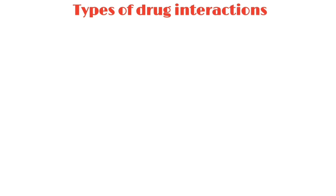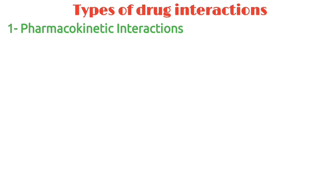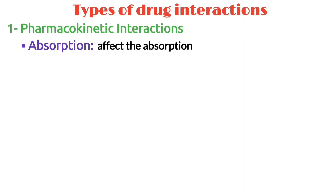There are several types of drug interactions. Let us first discuss the pharmacokinetic interactions. If we talk about the absorption of drugs, one drug can affect the absorption of another drug from the digestive tract.